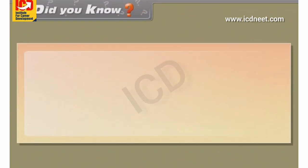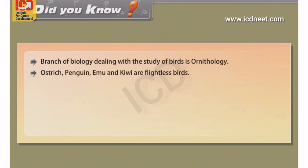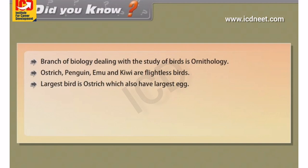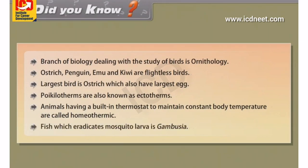Did you know? The branch of biology dealing with the study of birds is Ornithology. Ostrich, penguin, emu and kiwi are flightless birds. The largest bird is the ostrich, which also has the largest egg. Poikilotherms are also known as ectotherms. Animals having a built-in thermostat to maintain constant body temperature are called homeothermic. The fish which eradicates mosquito larvae is Gambusia.